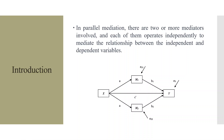Let us take a layman example. A child wants to go to the picnic. The child is represented here as X and the child has to convince the father, which is denoted by Y. So the child can approach the father directly, or take different routes. The child will approach first the mother, which is M1, and the mother will convince the father. Another route is the child approaches the grandfather, M2, and the grandfather convinces the father. So this is the indirect effect.